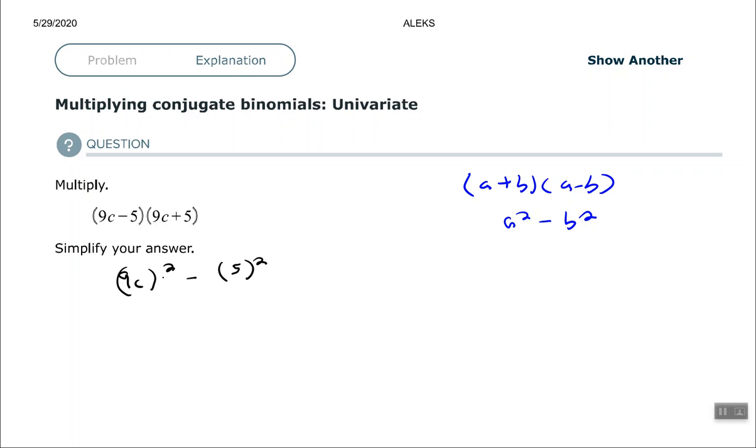So 9c squared, you have to square each one of those. Nine squared is 81 and then c times c squared. So 9 squared is 81 and then c to the second power is c squared minus 25. That's all there is to using that shortcut.